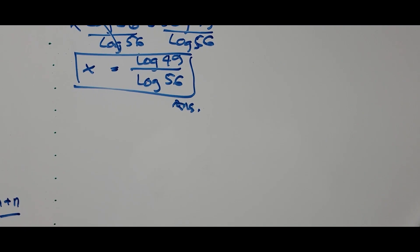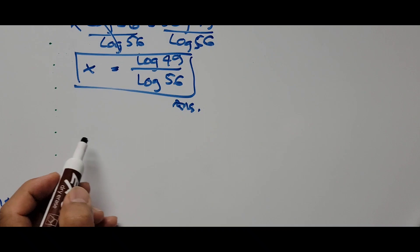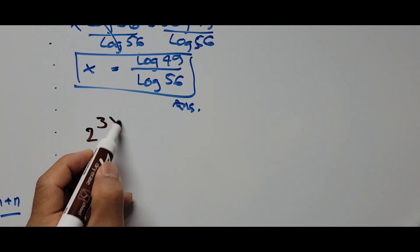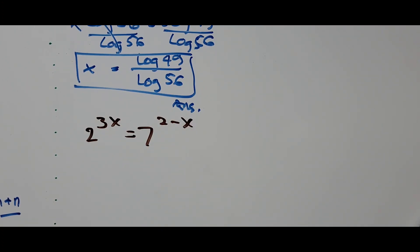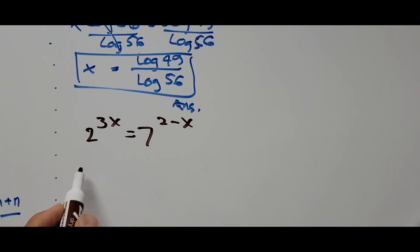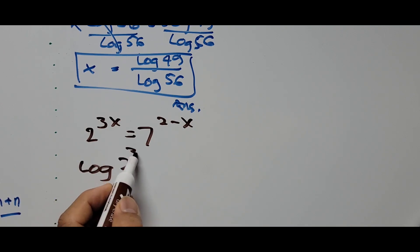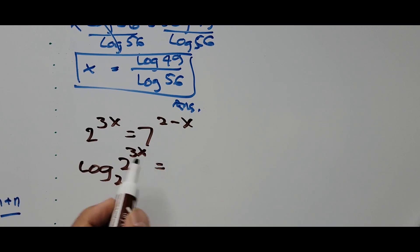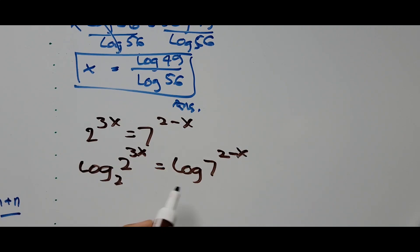Now for the second method. We write the equation again: 2 raised to 3x equals 7 raised to 2 minus x. We'll use the change of base formula for logarithms. Taking the logarithm of 2 to the 3x to base 2 equals the logarithm of 7 raised to 2 minus x to base 2.